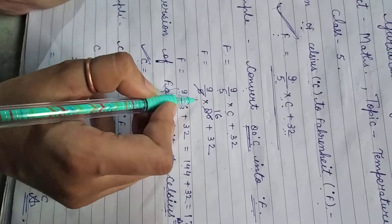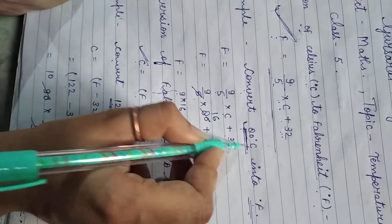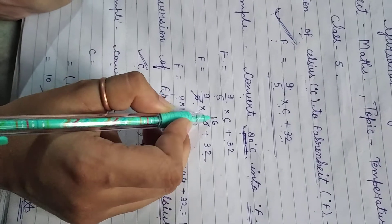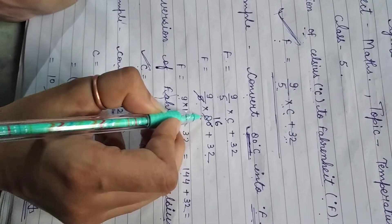F equals 9 upon 5, C equals 80, plus 32. 5 into 80 is 16, so 16 times 9...